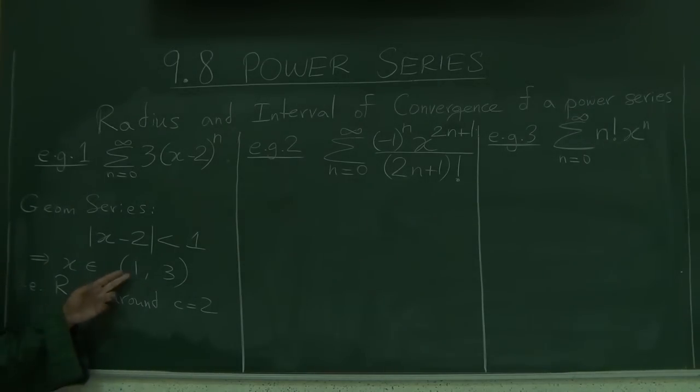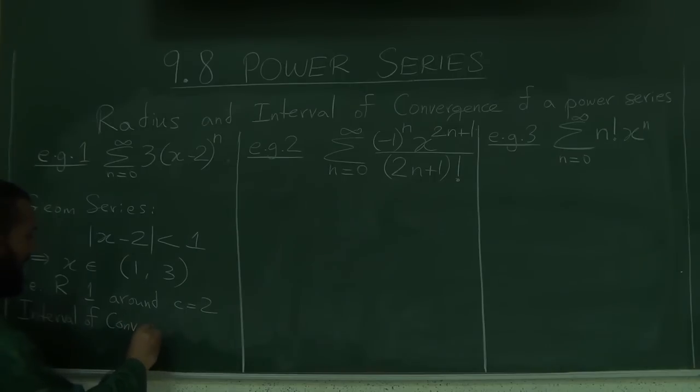And here, if you plug 3 or 1 specifically, then the absolute will be exactly 1 and neither of those will converge. So the interval of convergence, yes, the radius is 1, but the interval of convergence is exactly this. So let's write that down. Interval of convergence is exactly 1 to 3, neither of the end points included.